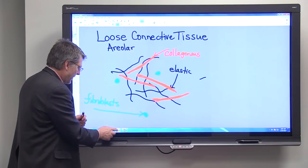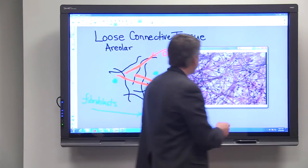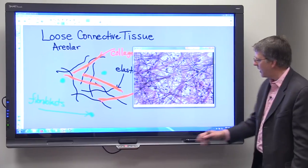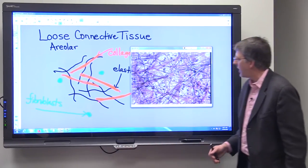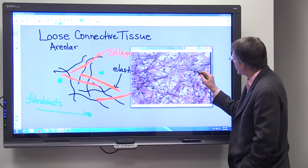So what we want to do next is look at a micrograph of loose connective tissue. And you can see the very structures that we just attempted to draw on this micrograph.